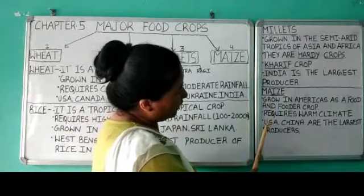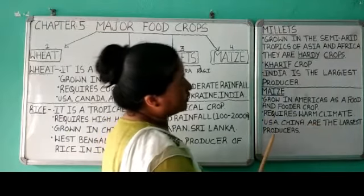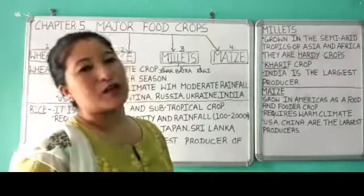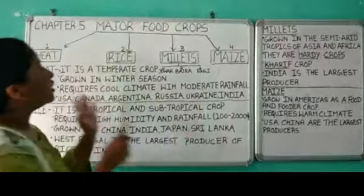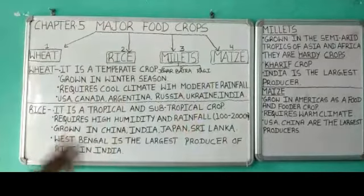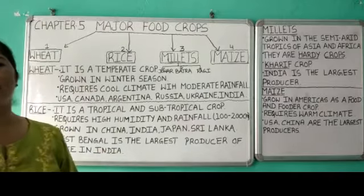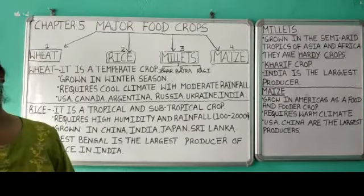Maize grows best in well-drained fertile soil. The USA and China are the largest producers of maize in the world. These are the four major types of food crops. In the next class, we will cover the different types of cash crops.